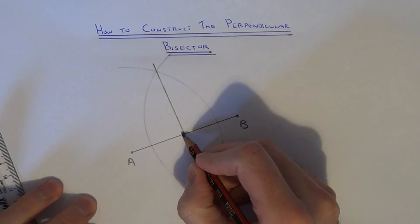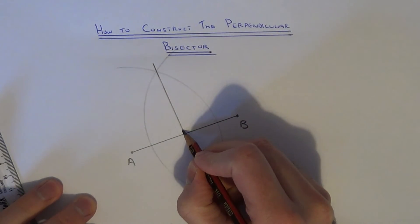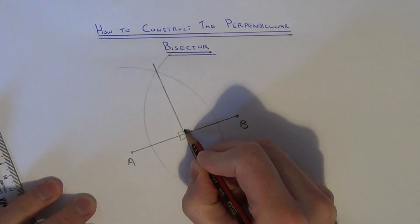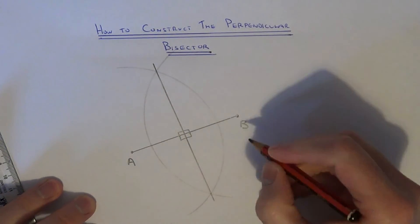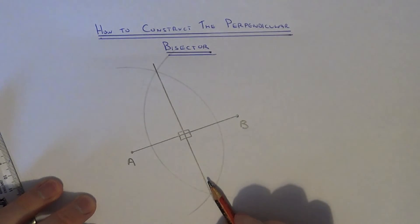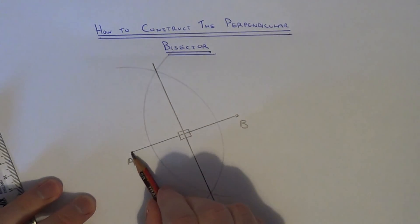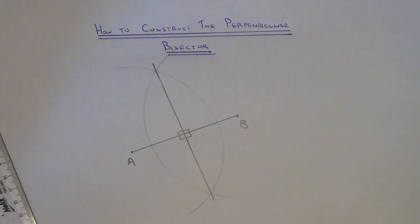The reason why is because it's cutting through the line at right angles and it goes exactly through the centre of the line AB.